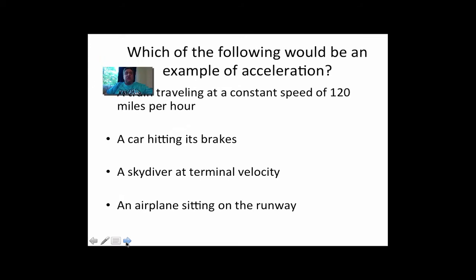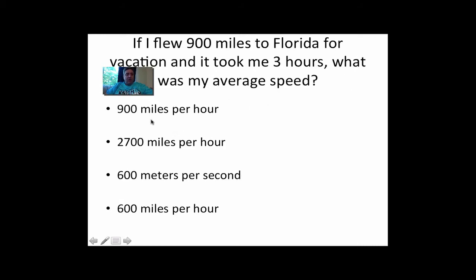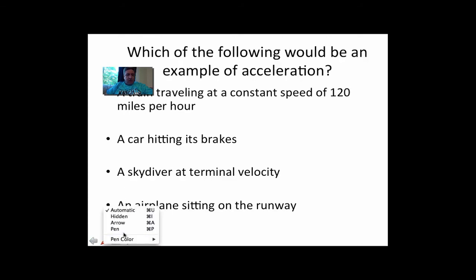Which of the following would be an example of acceleration? Again, speeding up, slowing down, changing direction. A train traveling at a constant speed of 120 miles per hour, that might be a pretty steep slope because that's pretty fast, but still it's a straight line. A car hitting its brakes, speeding up, slowing down, or changing direction? It's slowing down. Let's hold on to that.